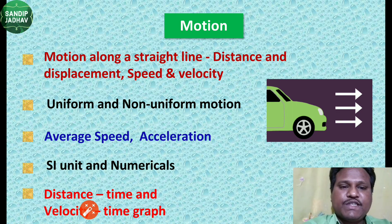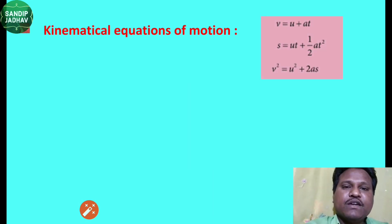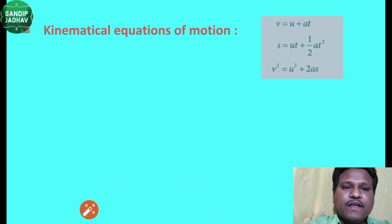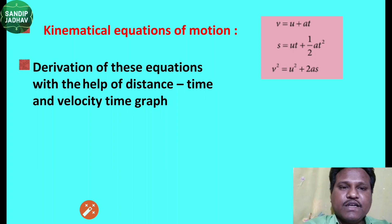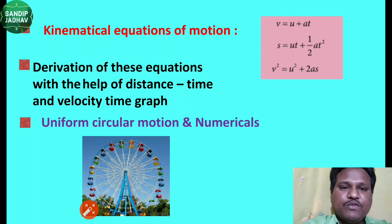We will plot distance-time and velocity-time graphs. Based on these graphs, we have three kinematic equations of motion, which give us the relation between initial speed u, final speed v, time, acceleration, and distance traveled by the object. We will derive these equations from the velocity-time and distance-time graphs, and then study uniform circular motion along with numericals. Practice of numericals is very essential in Physics.